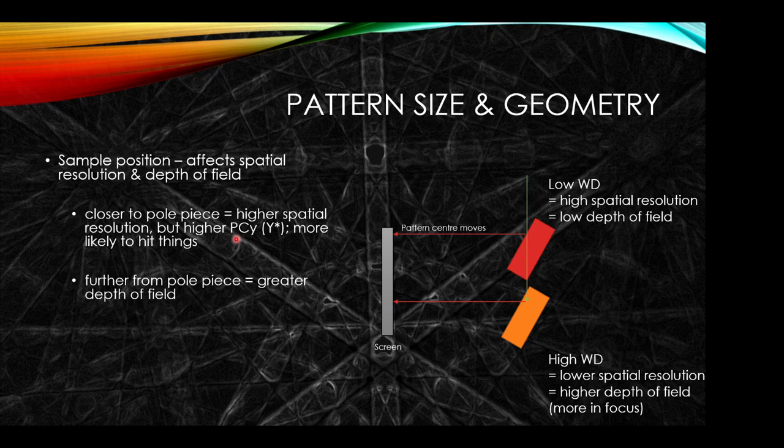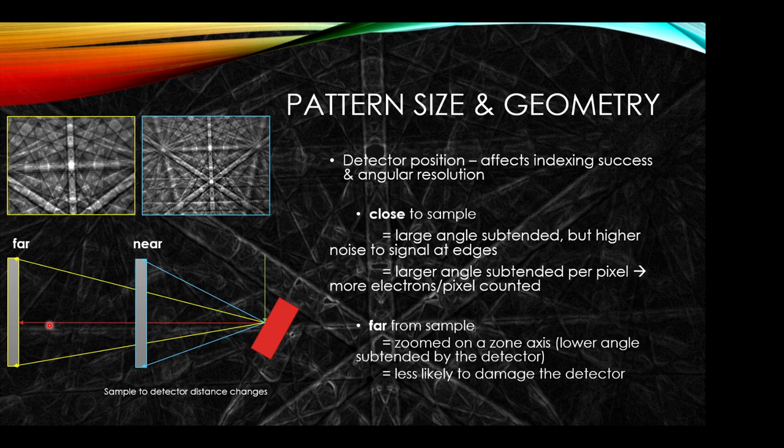The other aspect of geometry is that you can move the detector. If you move the detector close to the sample, the angular range subtended is larger, so you'll see a greater angular range across the diffraction pattern. However, the signal-to-noise towards the edge will decrease quite fast if not set up well. If you pull the detector backwards you may have to count longer, because the angle subtended per pixel is larger, and you'll be looking at a smaller area of the diffraction pattern. This could be useful if you want to look at how the zone axis structure is varying, but if you're trying to understand a low-symmetry crystal you may require more of the diffraction pattern.